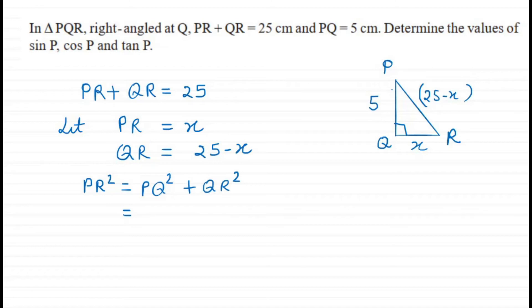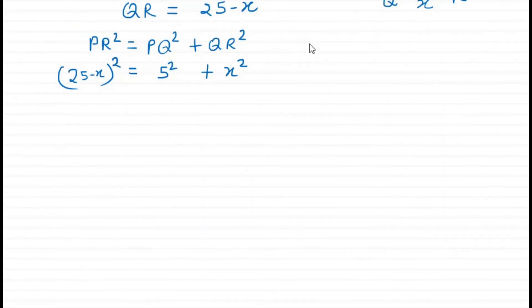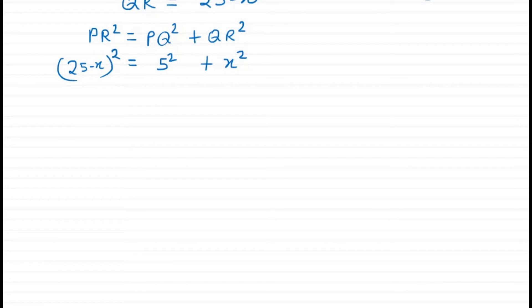PR is (25 minus x) whole squared, and PQ is 5 squared, plus QR is x squared.